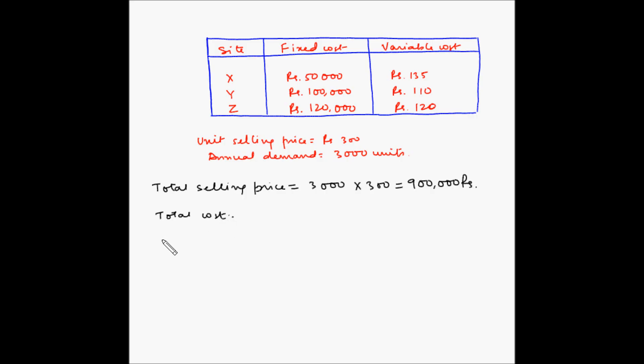Now let us find out the total cost for X. It will be 50,000 plus 135 multiplied by 3000. So this will be 50,000 plus 405,000, and this is equal to 455,000 rupees.